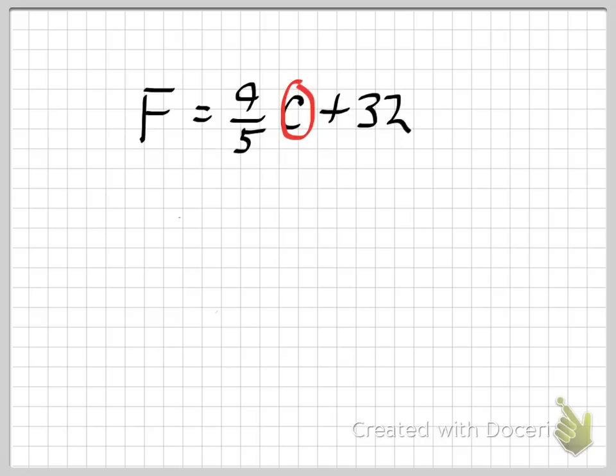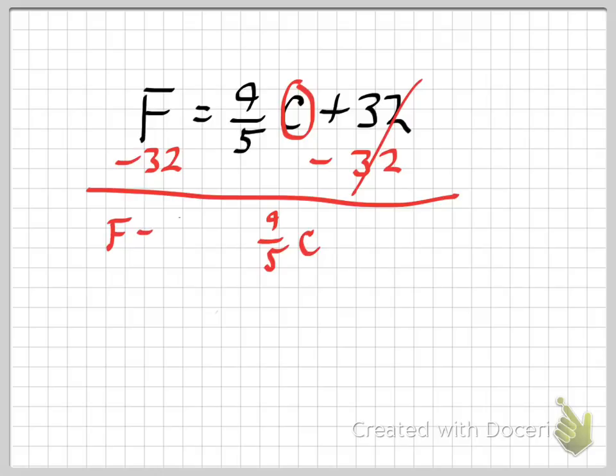We have 9 fifths times C plus 32. Just like before, sad map opposites and balance tells me to subtract the 32 first. When I do that, fruit ninja, I get 9 fifths times C is going to equal, again, F and 32 are not like terms, so I'm going to put them like that. And that's what I do. And now, finally,